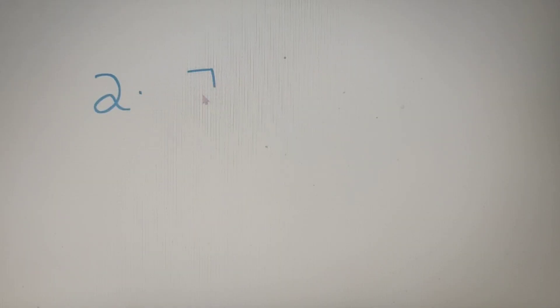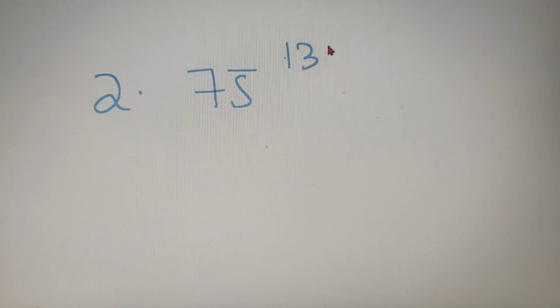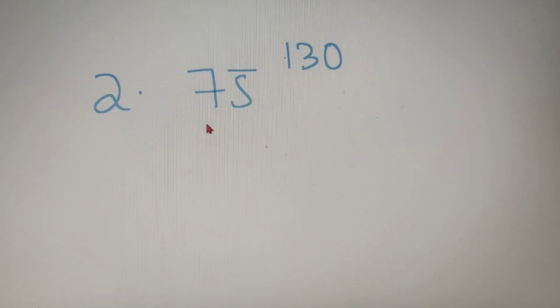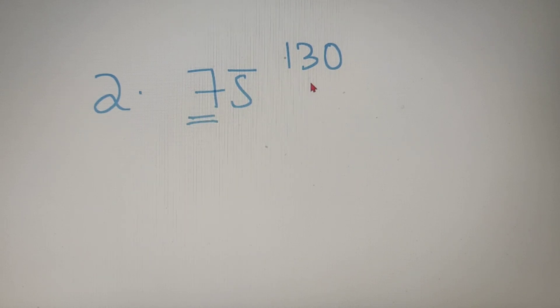Now for our second example, we have to find out the last two digits of the number 75 raised to the power of 130. We can see that the second last digit is odd but the power is even, so the last two digits will be 25.